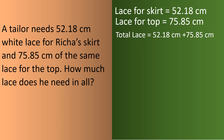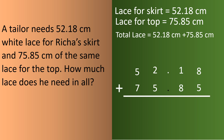We write them in column form: 52.18 cm, then 75.85 cm, and write the sign of addition. 8 plus 5 equals 13 — write 3, carry 1. 1 plus 1 is 2, plus 8 is 10 — write 0, carry 1. Before continuing, we write the decimal point.